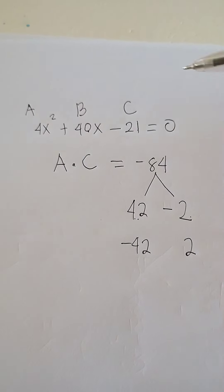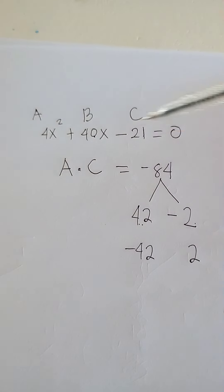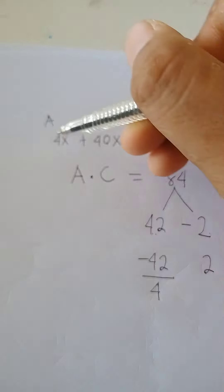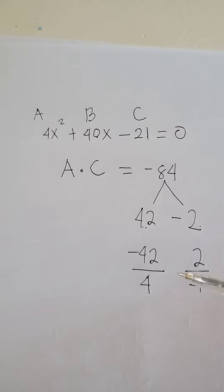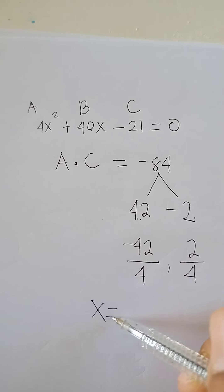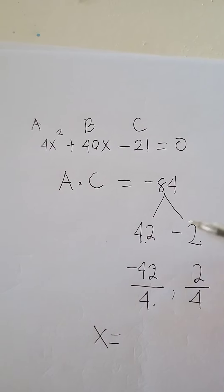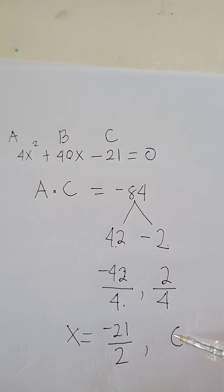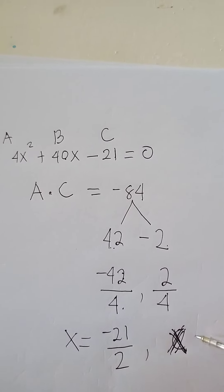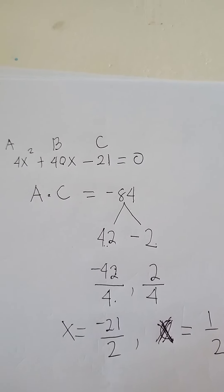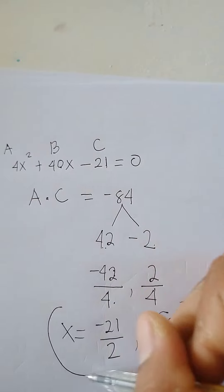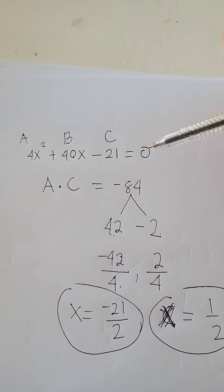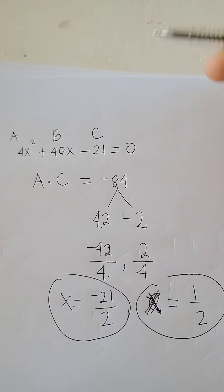To solve for the values of x or the roots, divide these factors by our value of A. We have a common factor of 2, so x equals negative 42 over 4, which simplifies to negative 21 over 2. And the other value of x equals positive 2 over 4, which is 1 half. These are the roots of our quadratic equation 4x squared plus 40x minus 21 equals 0.